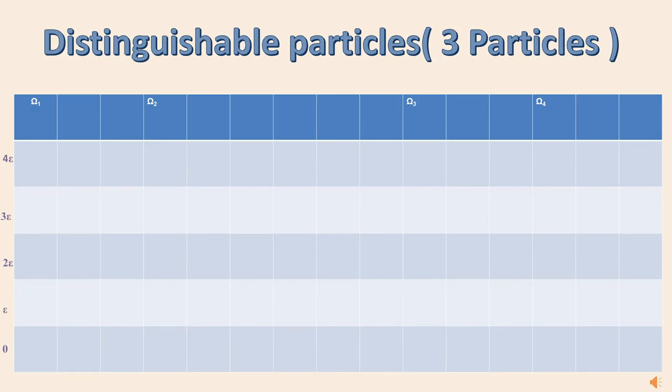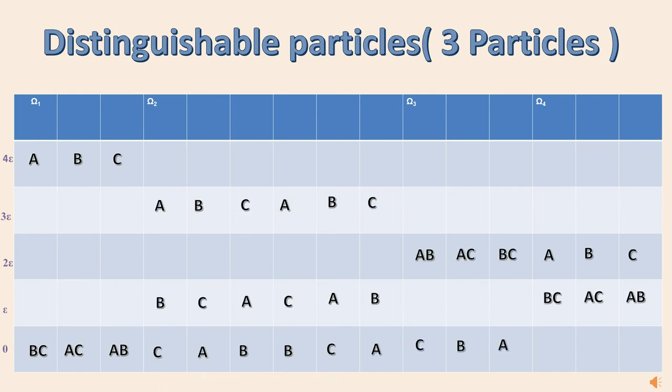Now, when these three particles are distinguishable, that is, let's term them as A, B, and C, we have the following arrangement as shown. Here, one has to notice that all possible combinations of these three particles A, B, and C are being considered. You can pause the video here and understand how these combinations are being done.